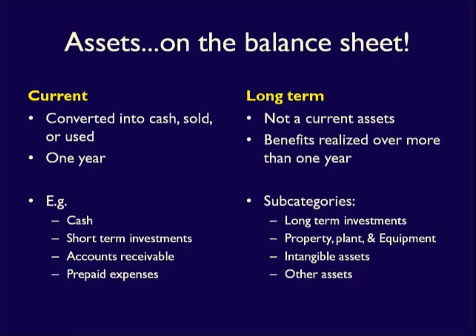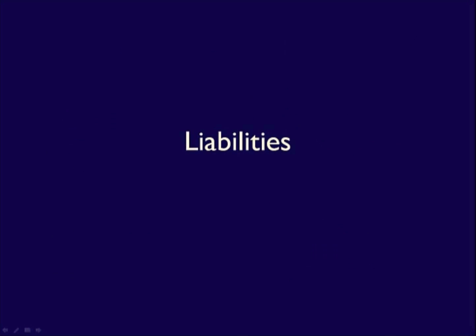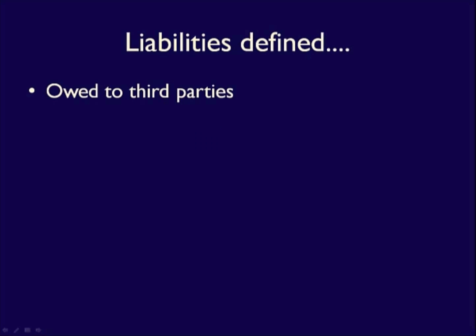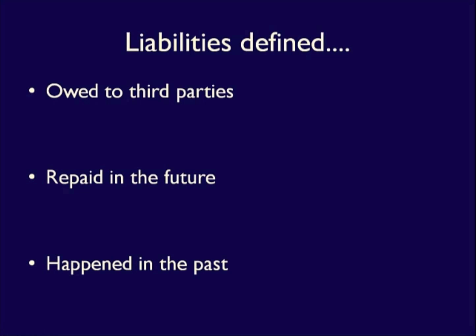How do companies get their assets? They often use liabilities — they take on debt in order to increase their assets. Liabilities also have three characteristics that define them. Liabilities are owed, they will be settled in the future, and liabilities are due to past events. Liabilities are an obligation or debt owed to third parties — individuals or groups outside of the business. A personal example of a liability is the student loan you might owe as a debt to the bank.